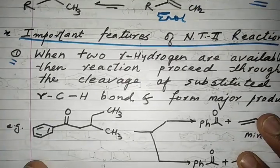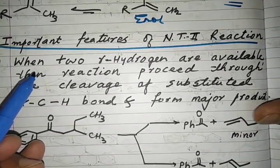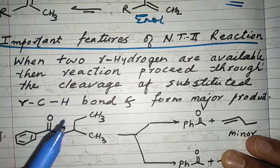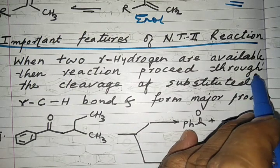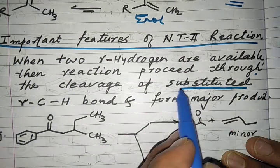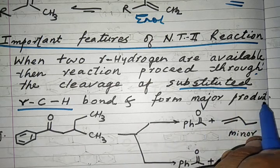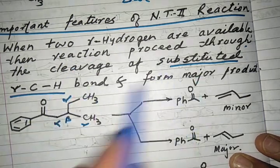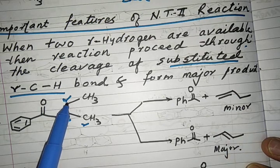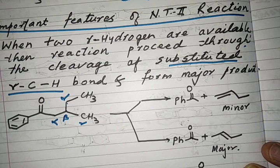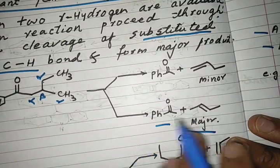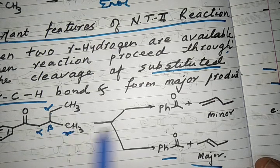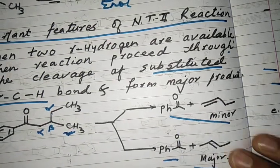The first feature: if the ketone contains two different types of gamma hydrogens, the reaction proceeds preferentially through cleavage of the more substituted gamma C–H bond, forming the major product. The cleavage at the less substituted gamma carbon gives the minor product.